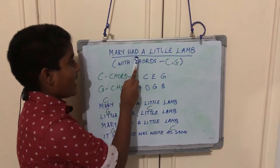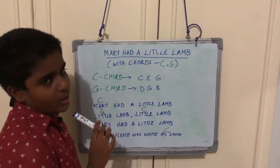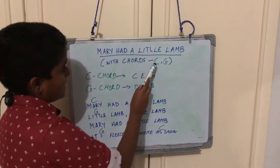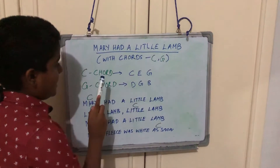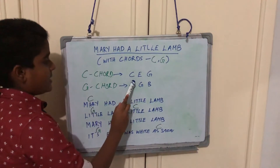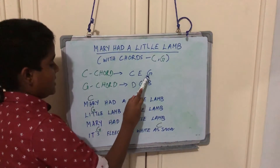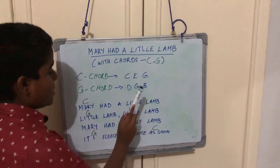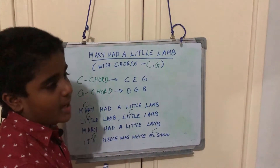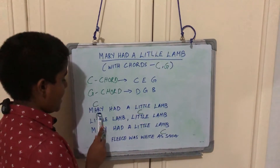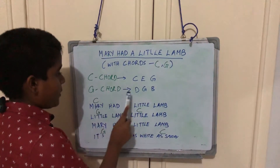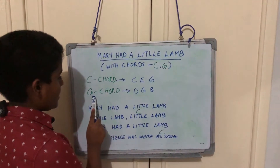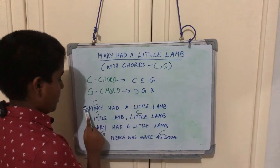For 'Mary Had a Little Lamb' we are using only two chords. The chords are C and G. C chord is C E G, and G chord is D G B. For 'Mary Had a Little Lamb,' the first line 'Mary' we are using C chord, and 'Little Lamb' we are using G chord.